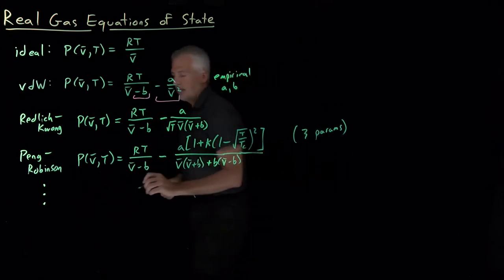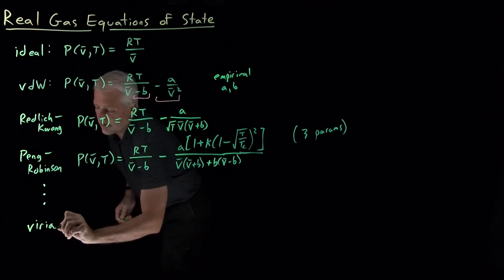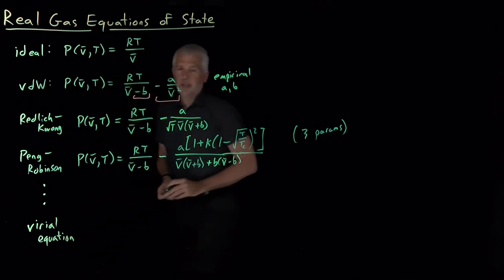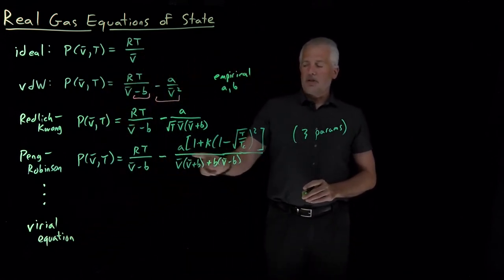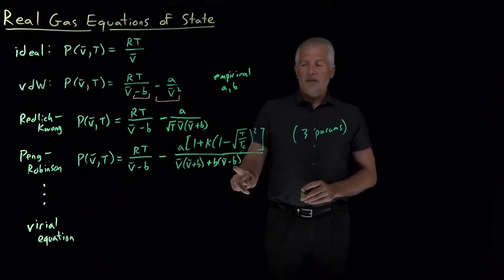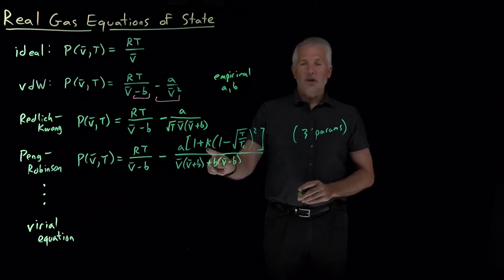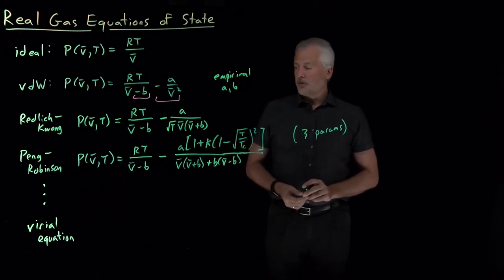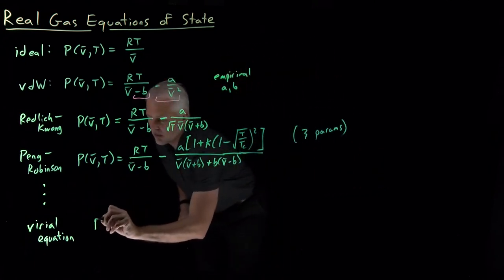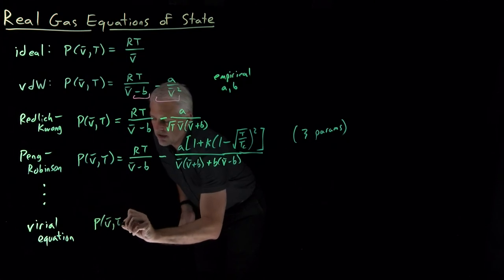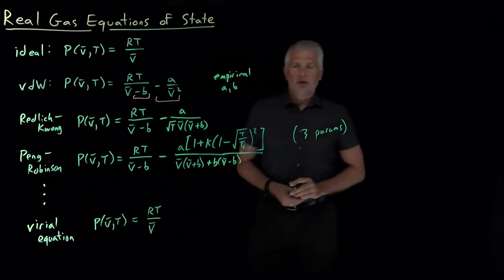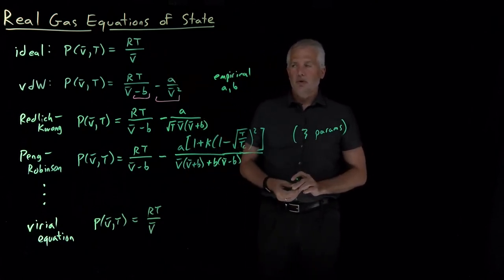But if we take this trend to its natural conclusion, we can say, why bother with physical parameters that still have something to do with intermolecular interactions, or size of the molecules, or the sphericalness of the molecules, why not just give up on the physical meaning of the parameters altogether, and we can come up with an equation like the one we call the Virial equation, which says ideal gas was a good start. Pressure is RT over V, that's a good start. But of course, we need some corrections.